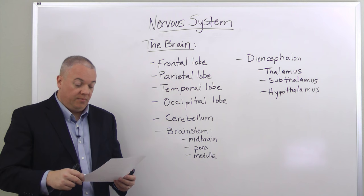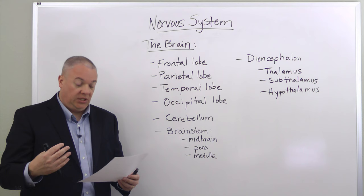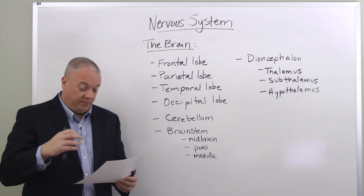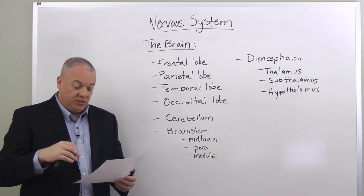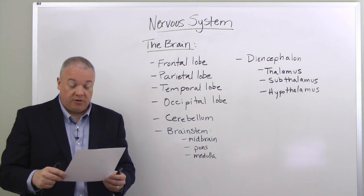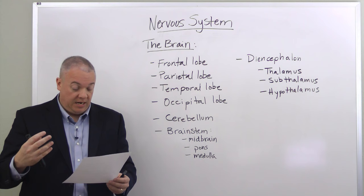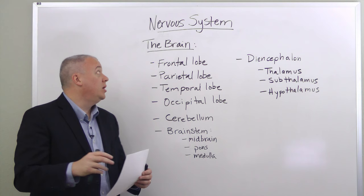The diencephalon includes the thalamus, subthalamus, and hypothalamus. The thalamus integrates and relays sensory information from the face, retinas, cochlea, and taste receptors, interpreting touch, pain, and temperature. The hypothalamus controls the autonomic nervous system and neuroendocrine system, maintaining body homeostasis, regulating body temperature, appetite, thirst, sleeping cycles, and hormone secretions.